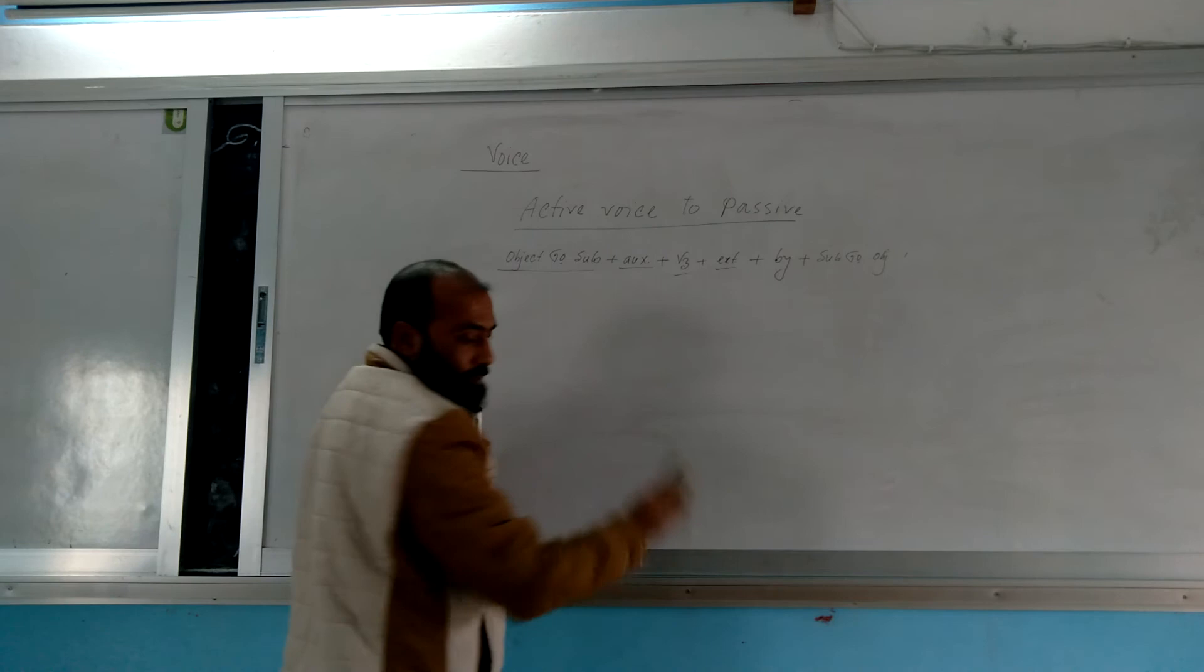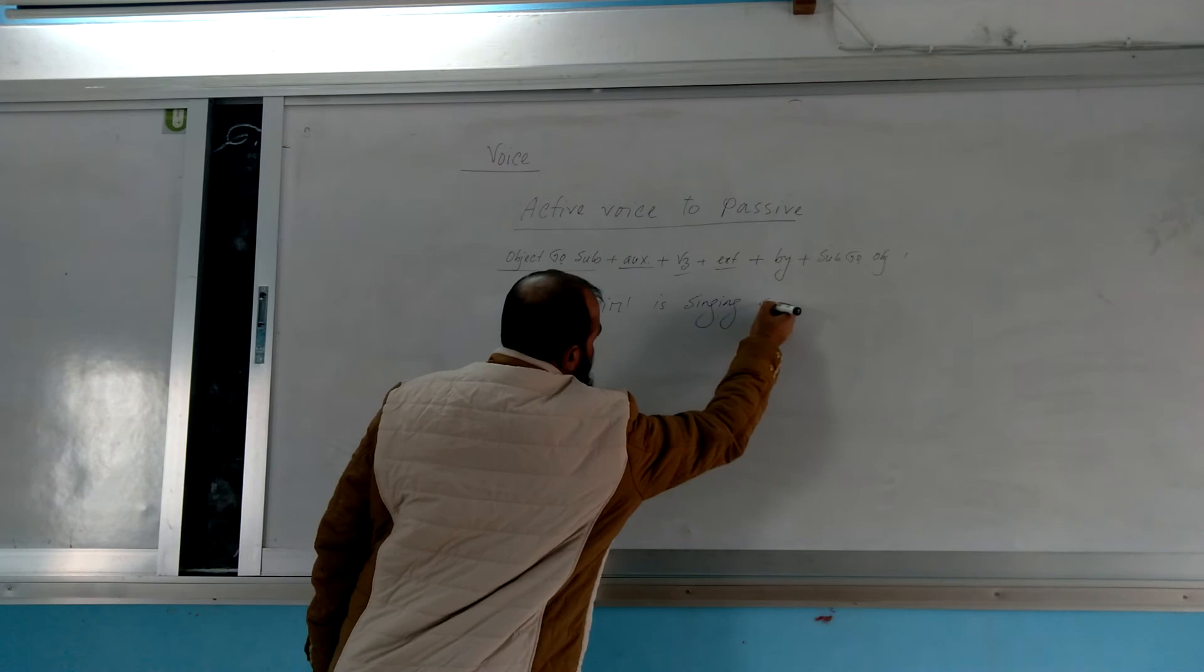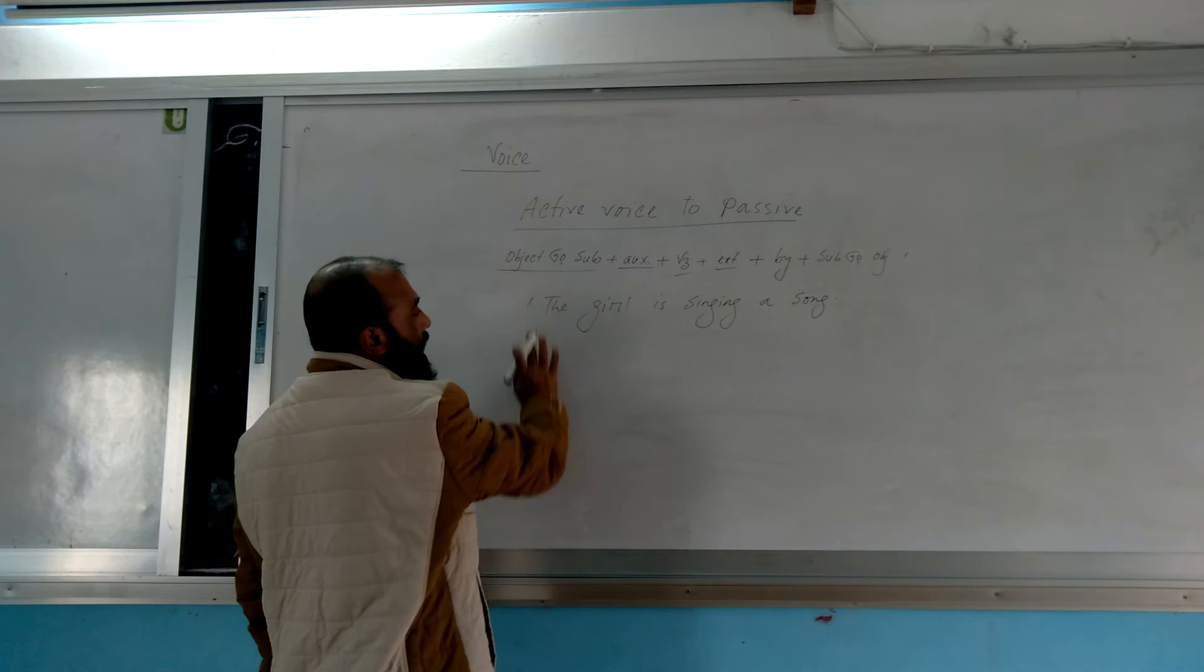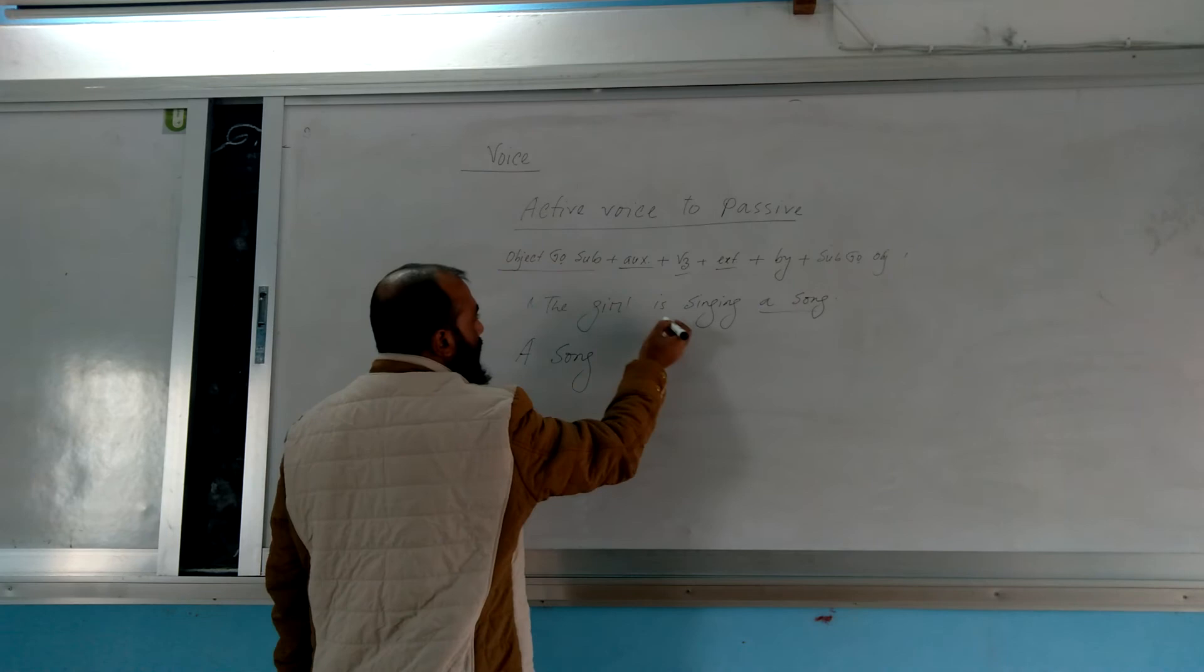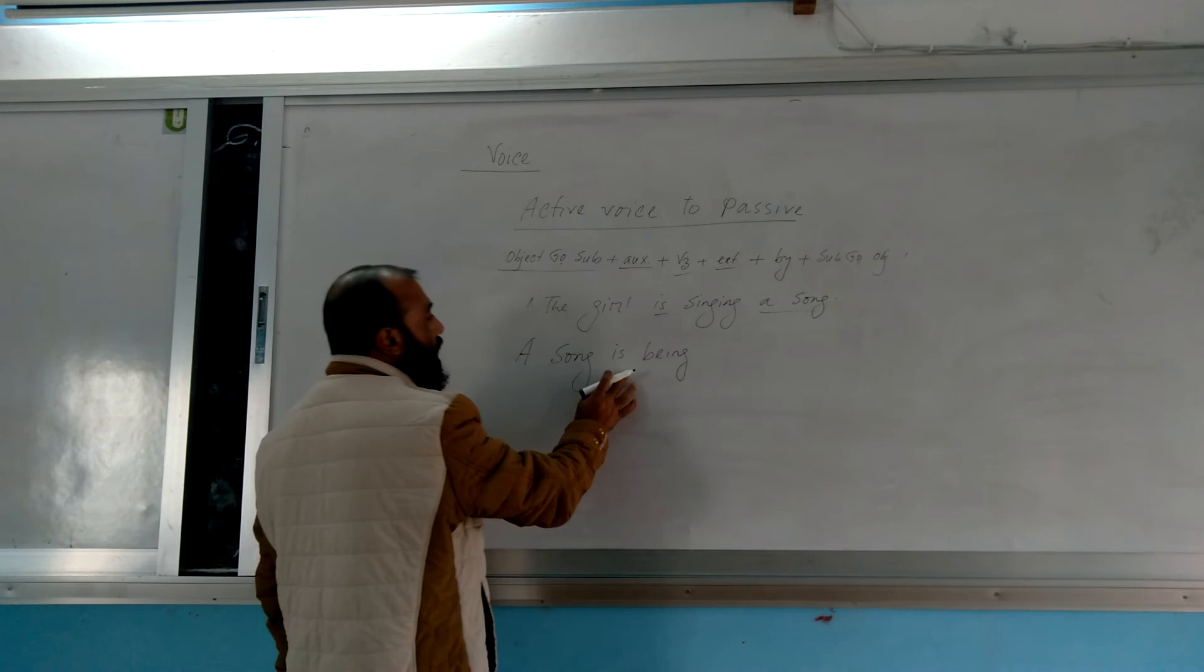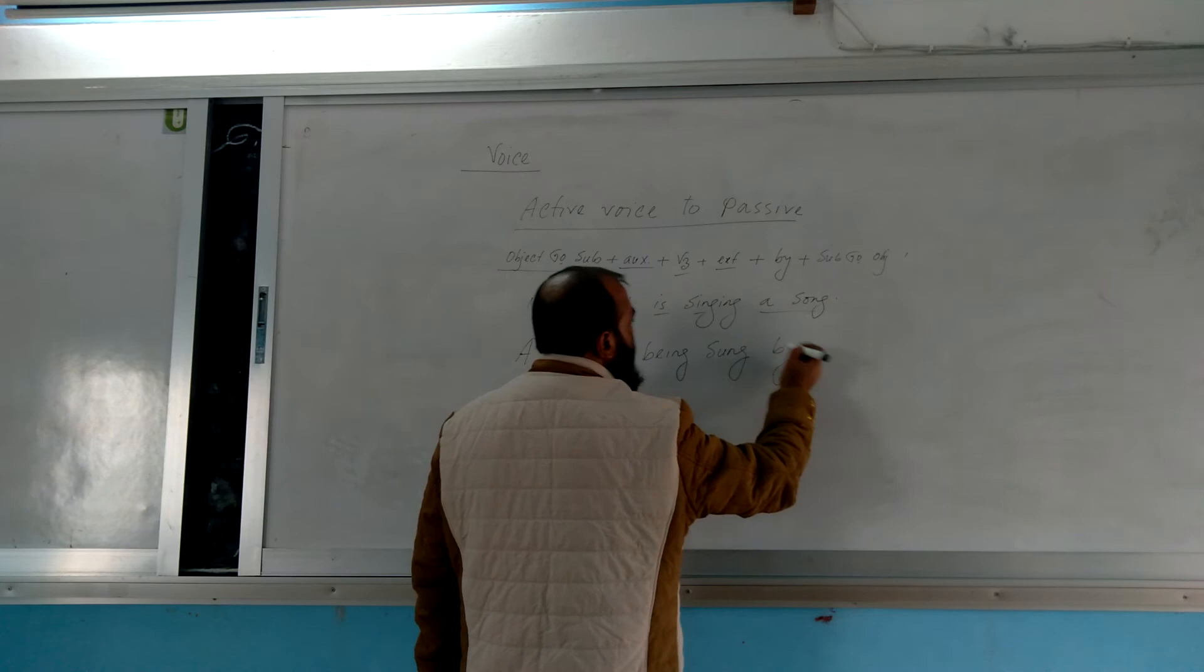The girl is singing a song. First, take the object and make it subject. The girl is singing - what is she singing? A song. So this will be the object. A song. Then auxiliary verb: in the question there is is, so we add being - is being. Then past participle: sing becomes sung. There's no remaining part, so we don't use it. At the end we add by. Then subject becomes object: the girl.